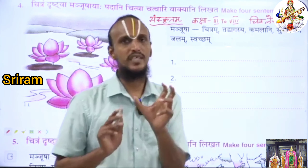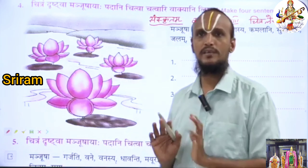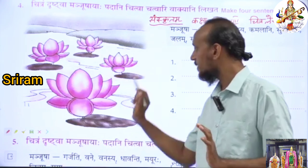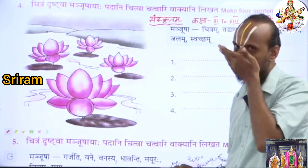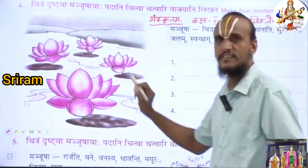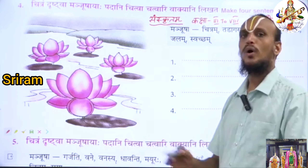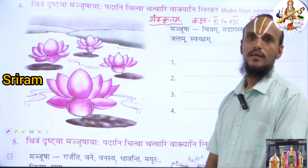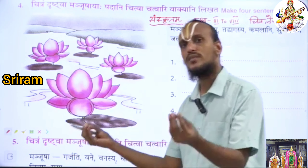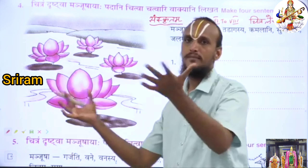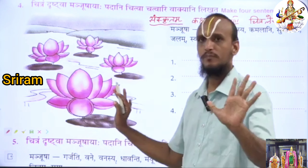First, you see the picture properly. See this picture. This is a picture of a pond. In the pond, so many lotuses are blooming.